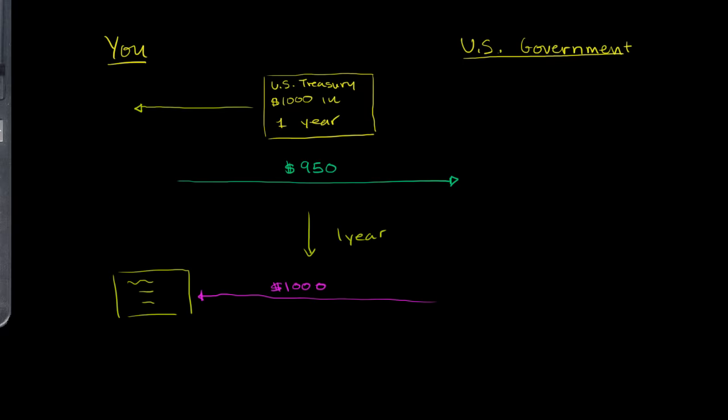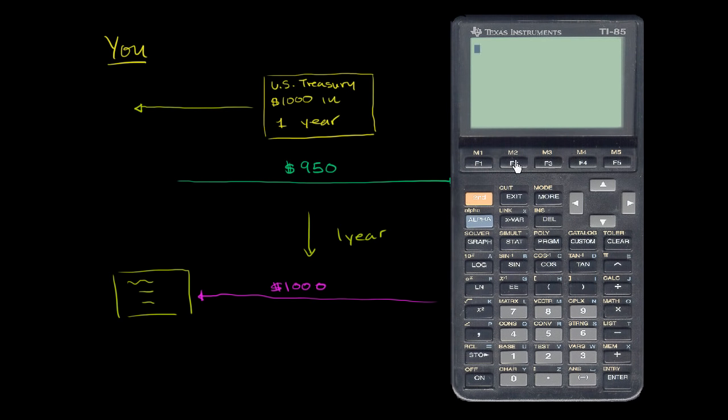So let's think about it this way. Let's get a calculator out. So 1,000 divided by 950 is equal to 1.05, just to round it, 1.053. So you got 1.053...